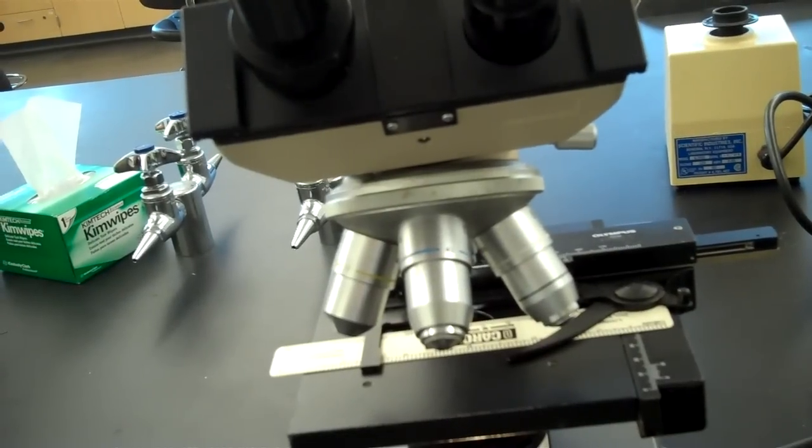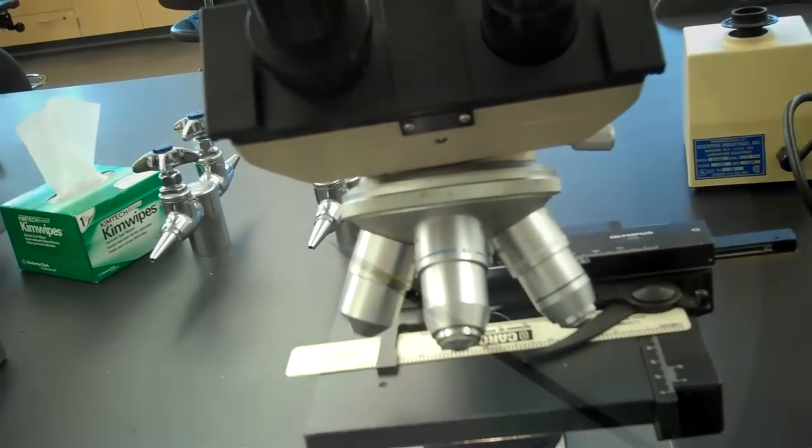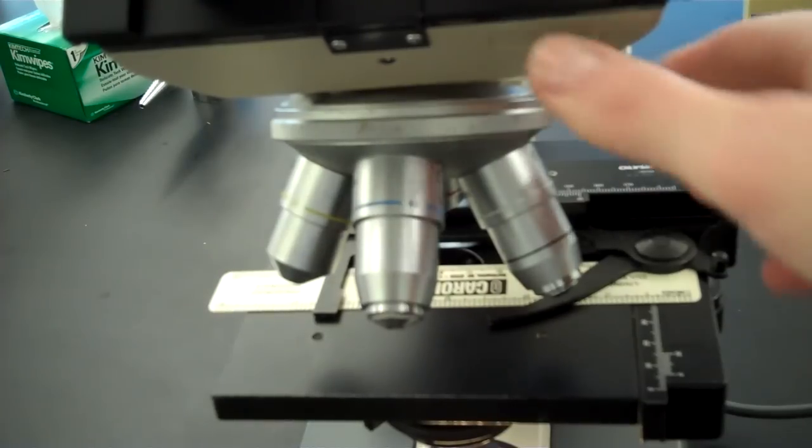With the 4x objective lens snapped in place, focus on the ruler. You will see something like this. Each one of those lines are one of the lines of the ruler, so between each one of those lines represents one millimeter. After you've focused on the ruler and measured the diameter of that light circle on the 4x objective lens,